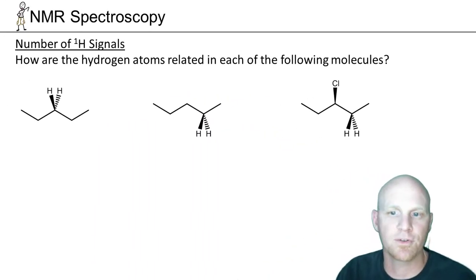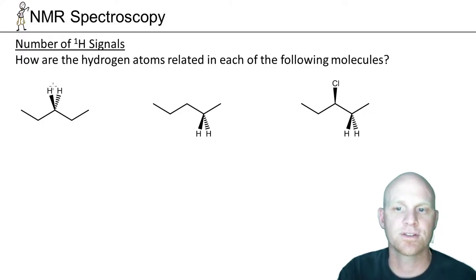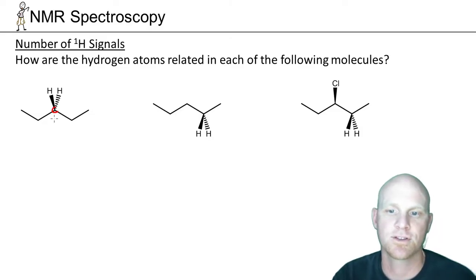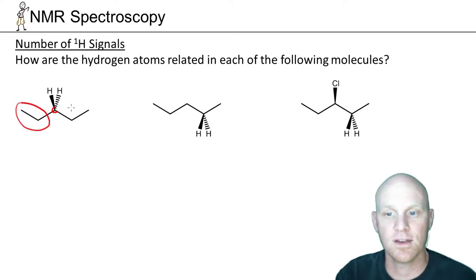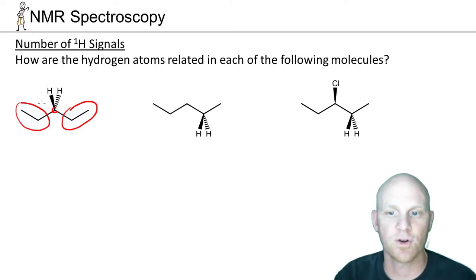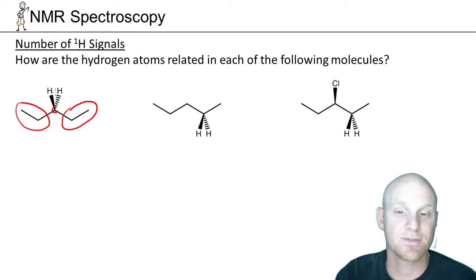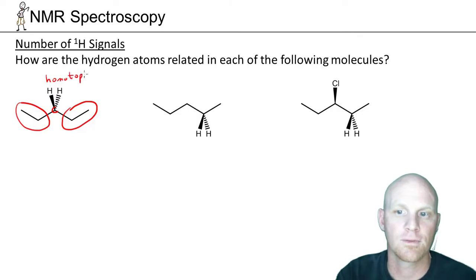Let's look at three more examples. For these two hydrogens, if replacing one with Z would make it a chiral center — in this case it would not, because this carbon already has two identical ethyl groups, so replacing one H with Z would not give it four different groups. Right off the bat, these two hydrogens are homotopic.